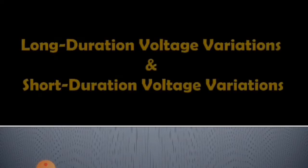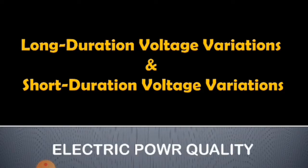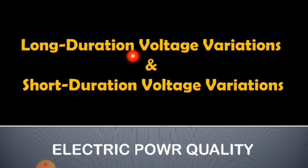Hi everybody. I am going to focus on long duration voltage variations and short duration voltage variations. These topics are related to electric power quality. Electric power quality means we have to transfer qualitative power from generating stations to consumer premises. Whenever disturbances happen in the system there is a decrease in the quality of power transferred. These are one of the causes for decreasing power quality: long duration voltage variations and short duration voltage variations.